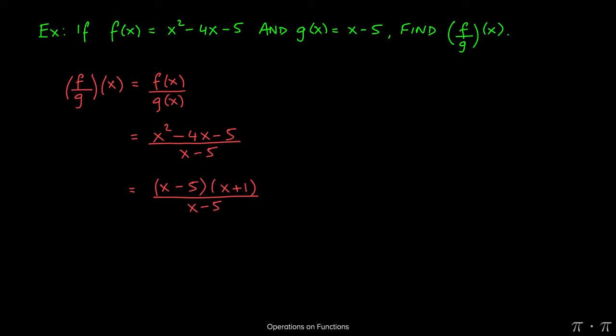Again, remember that we're looking for factors of negative 5 that add up to negative 4. So that's where we get negative 5 and positive 1 from.